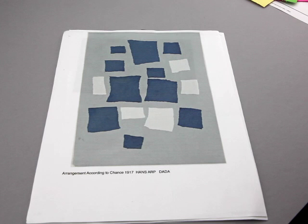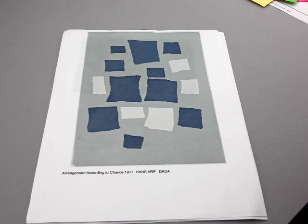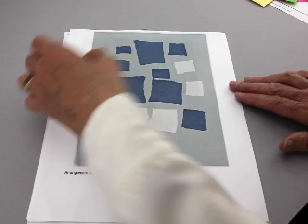Today we're going to work on an artwork that is based on the work by Hans Arp, his 1917 piece called Arrangement According to Chance. This one is really a lot of fun and it's very hard to create art totally based on chance.